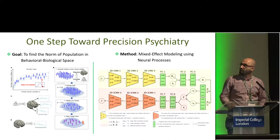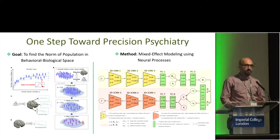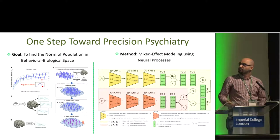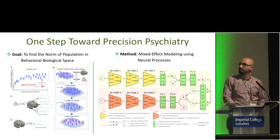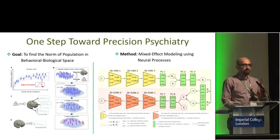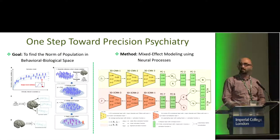In order to learn the norm of the population, we use a newly introduced method called neural processes, which enables us not only to learn the norm of the population but also the distribution of this function. It also enables us to estimate both sources of uncertainty in the model: aleatoric uncertainty and epistemic uncertainty.